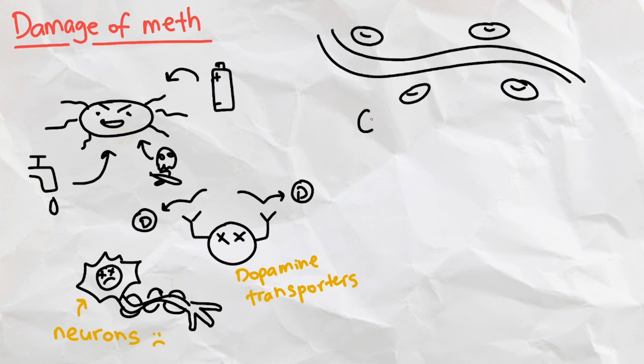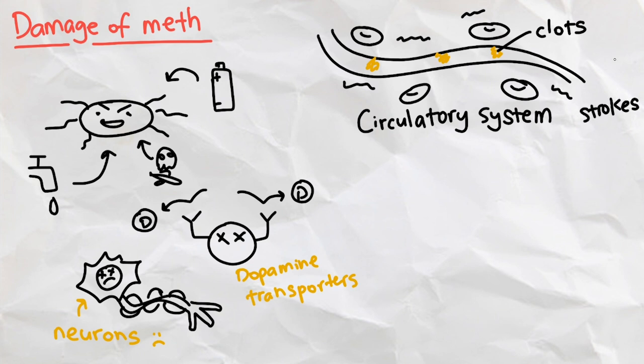Meth can also go after our circulatory system, damaging and scarring our blood vessels, which can lead to clots and strokes, which are pretty fatal.